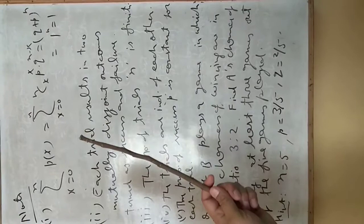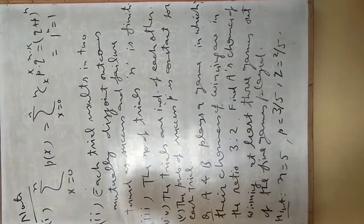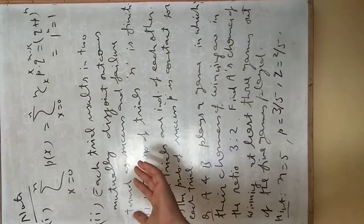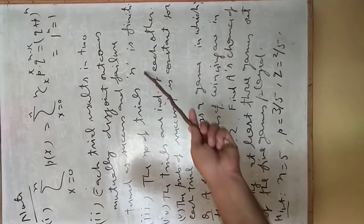Next, each trial results in two mutually disjoint outcomes termed as success and failure. We will take only those cases where we have two outcomes: first we will call as success and another we will call failure.